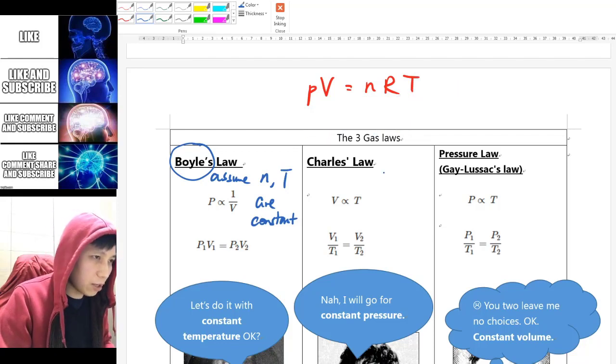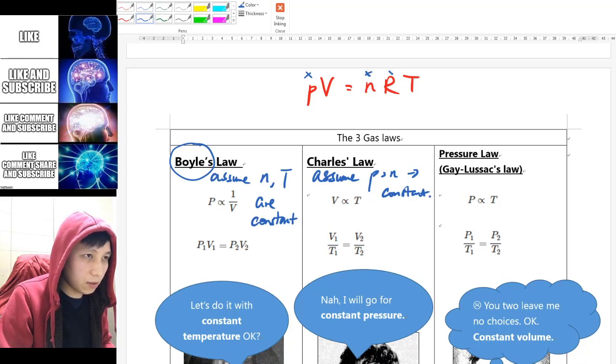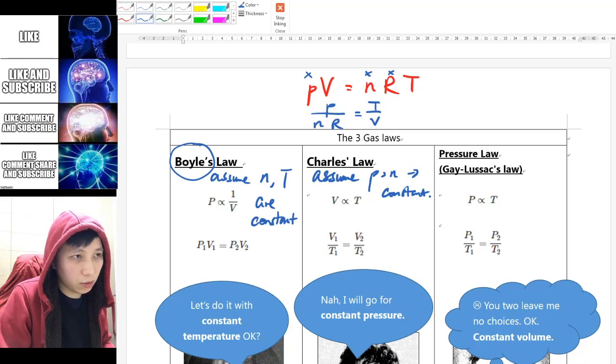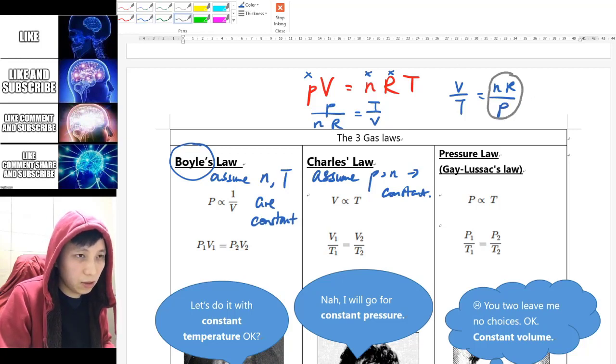Now if we try to change a control variable, for example if we try to keep P and n to be constant, then you have this constant, this constant, this constant. And if you mathematically move them on one side, so P over nR equals to T over V. Or you can also do V over T equals to nR over P. Well, this is the same thing.